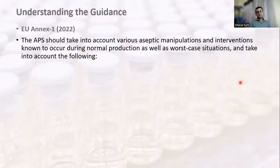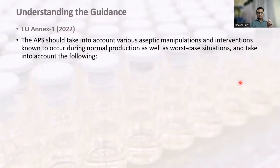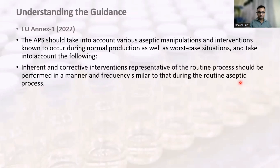The guidance further states that the aseptic process simulation should take into account various aseptic manipulations and interventions — whatever manipulations and interventions occur during normal production as well as worst case situations. There are two categories: inherent interventions, which are part and parcel of the process, and corrective interventions, which occur rarely or infrequently — such as changing certain parts or adjusting a sensor.